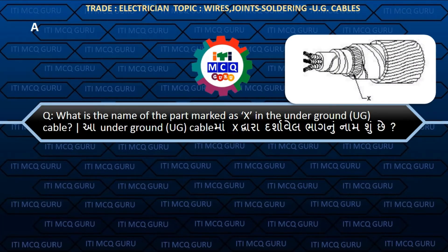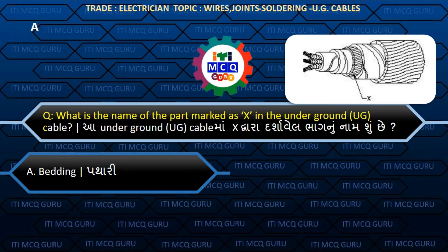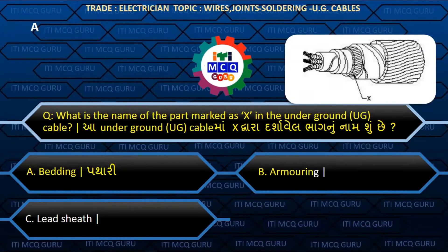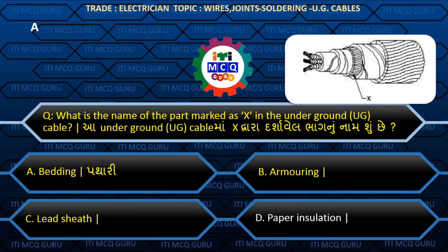What is the name of the part marked as X in the underground cable? (Underground cable maa X dwara darshawel bhaag noo naam shun chhe?) Answer A: Bedding.